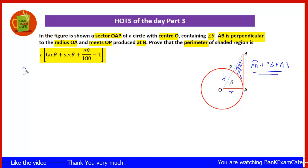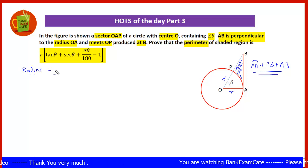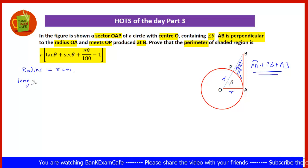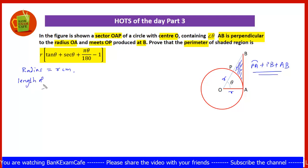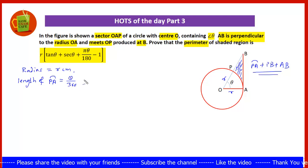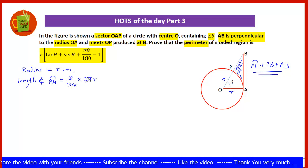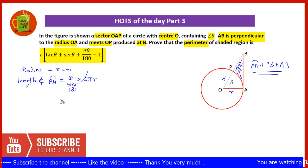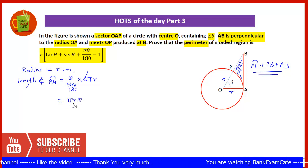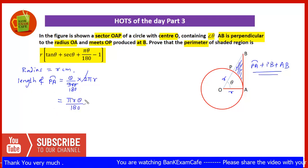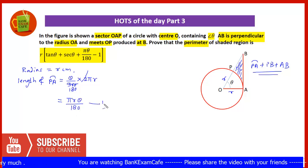Let the radius equal R centimeters. We will first find the length of arc PA. Length of arc PA equals theta by 360 into 2 pi R, which simplifies to pi R theta upon 180. Let this be equation number 1.